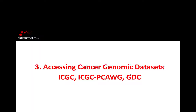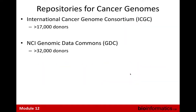We'll now talk about two major cancer data sets available for research. ICGC has 17,000 donors — you can access raw data if you wish, somatic mutations are openly available, and clinical data is also available so you can do a lot without applying for DACO. The NCI Genomic Data Commons currently has 32,000 donors, which I'll cover next.